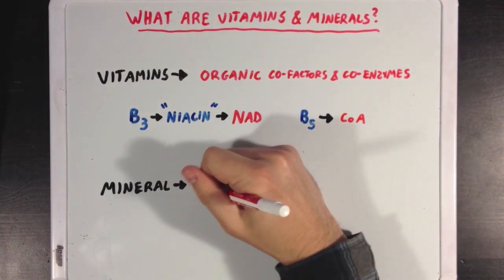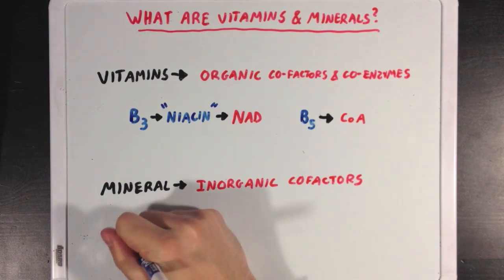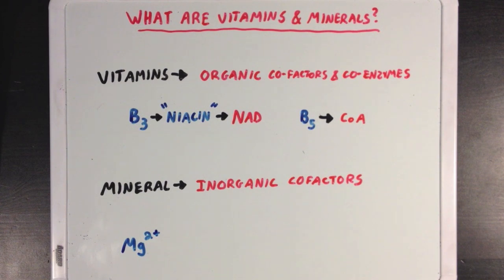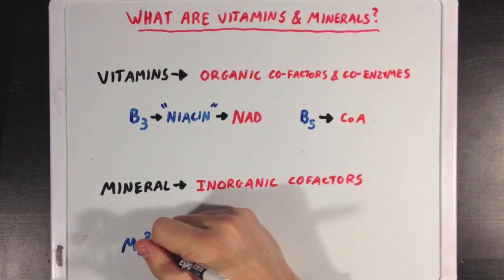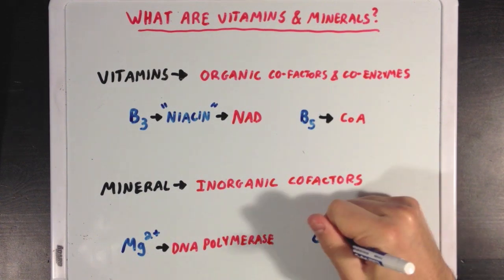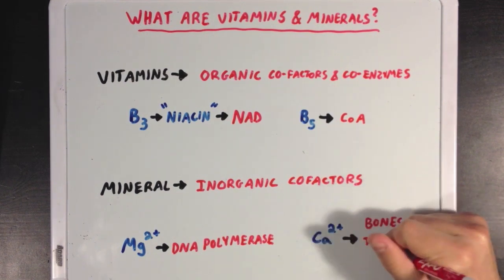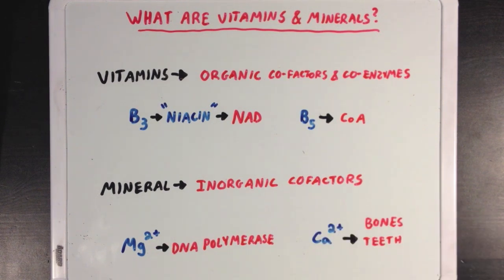Minerals, on the other hand, are inorganic, meaning they aren't carbon-based, and minerals are usually just cofactors in our body. So magnesium would be a great example of a mineral cofactor that an enzyme like DNA polymerase would use. Now not all minerals act only as cofactors. Some minerals, like calcium, which can act as a cofactor, is also a critically important component of bone and teeth, and doesn't strictly act as an enzyme cofactor — it's actually an important part of the structure itself.